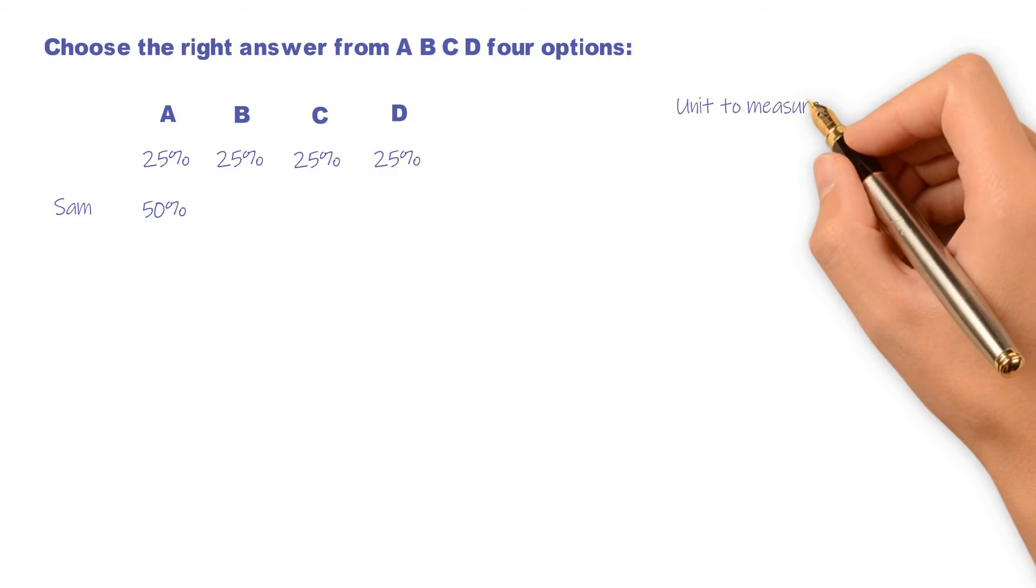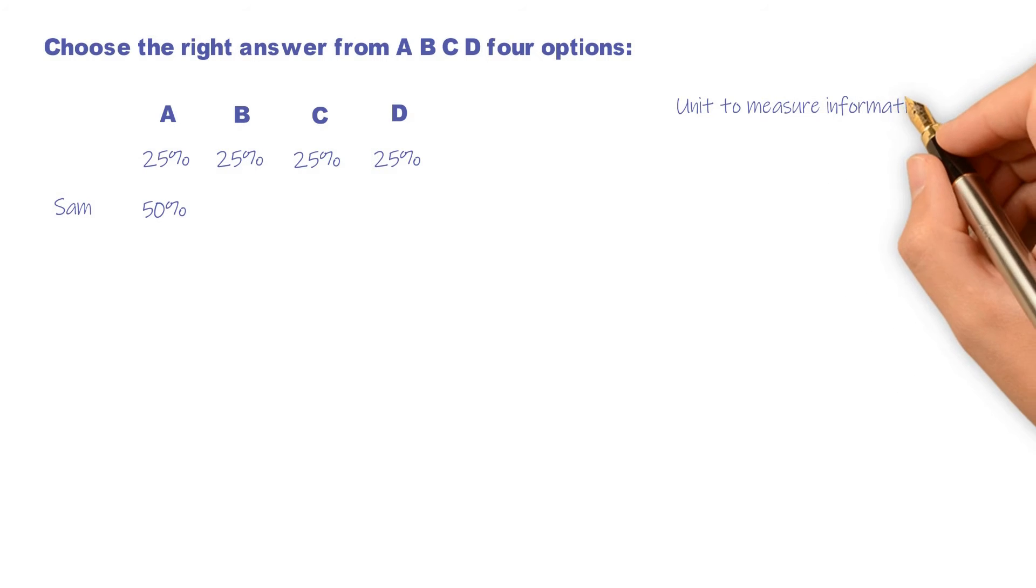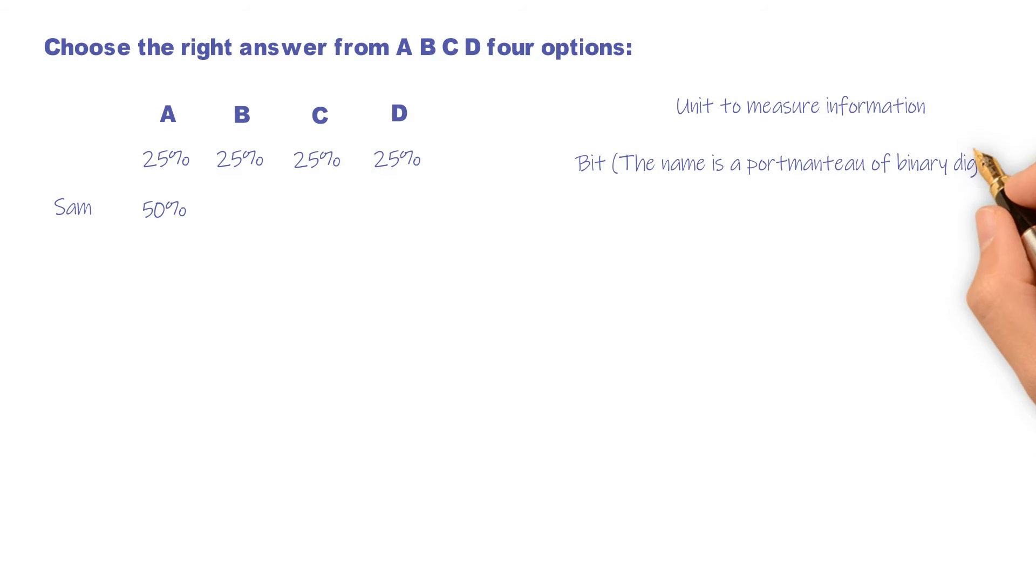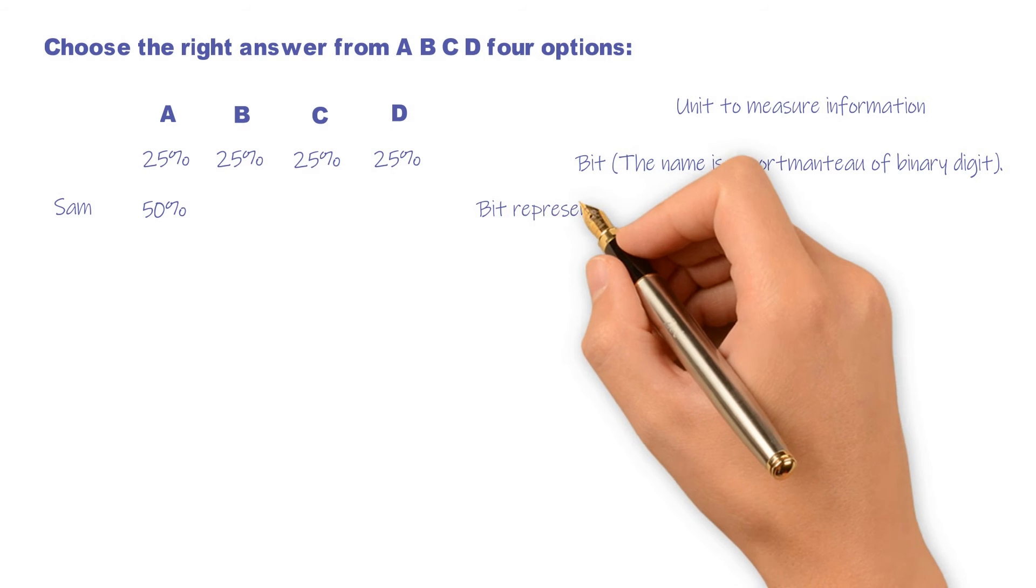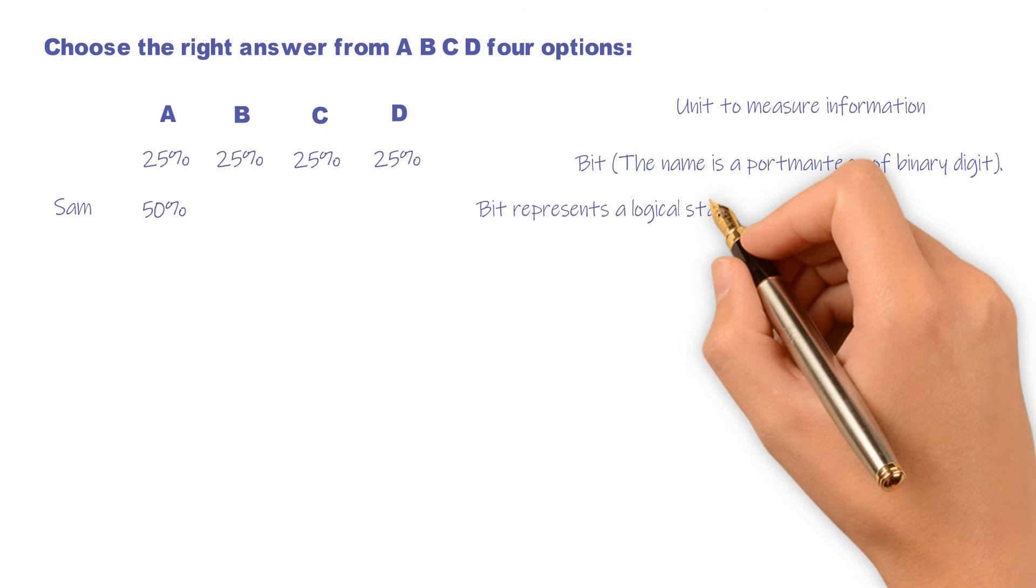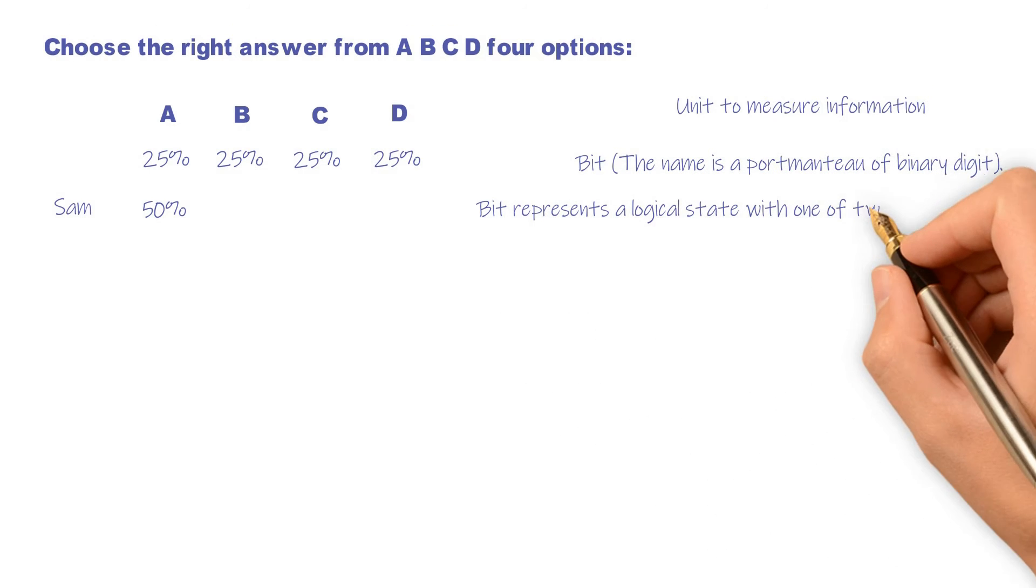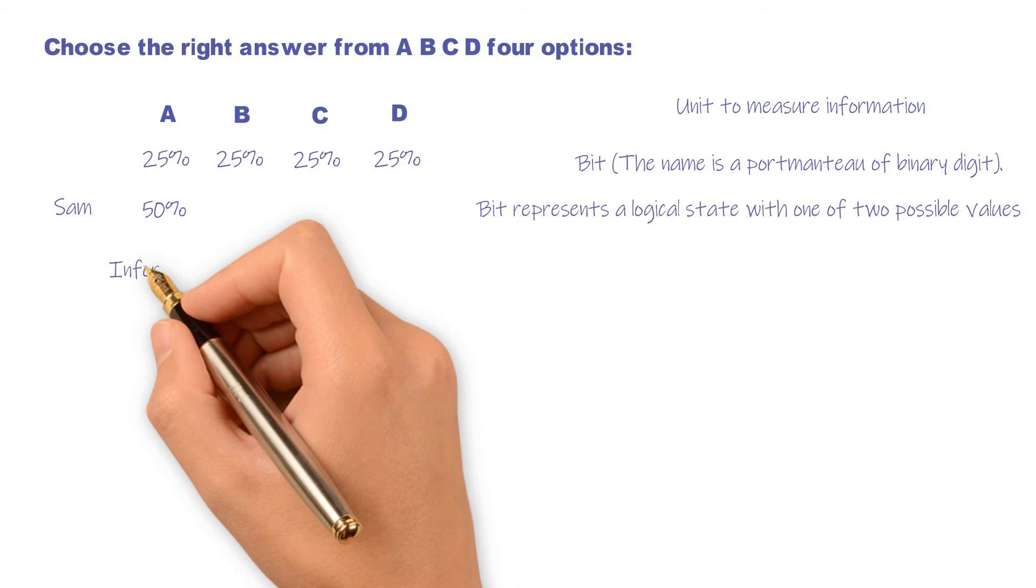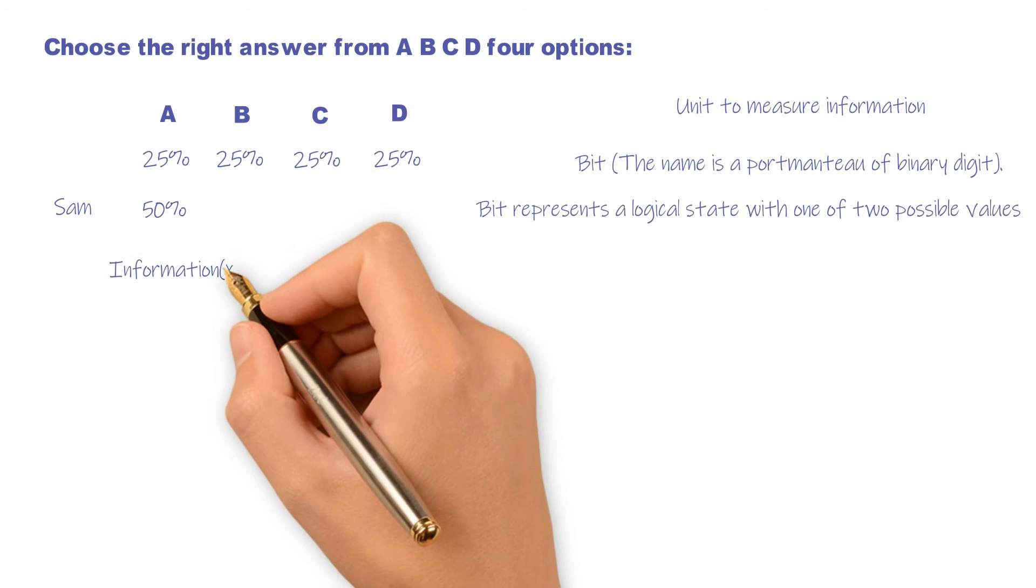First, we need to choose a unit to measure information. Just like we can use kilogram to measure weight, use minute to measure time, to measure information we use bit. The next thing is to define the unit. The bit represents a logic state with one of two possible values. These values are most commonly represented as one or zero. Let me introduce you to the formula of the amount of information.